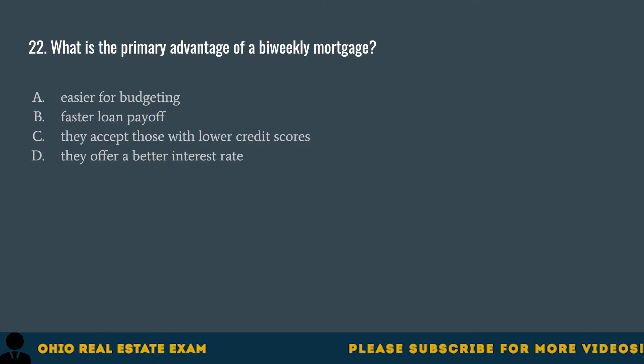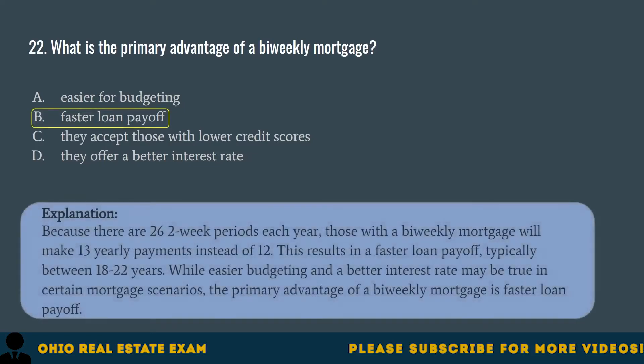Question 22. What is the primary advantage of a bi-weekly mortgage? A. Easier for budgeting. B. Faster loan payoff. C. They accept those with lower credit scores. D. They offer a better interest rate. The correct answer is B. Faster loan payoff. Because there are 26 two-week periods each year, those with a bi-weekly mortgage will make 13 yearly payments instead of 12. This results in a faster loan payoff, typically between 18 to 22 years.